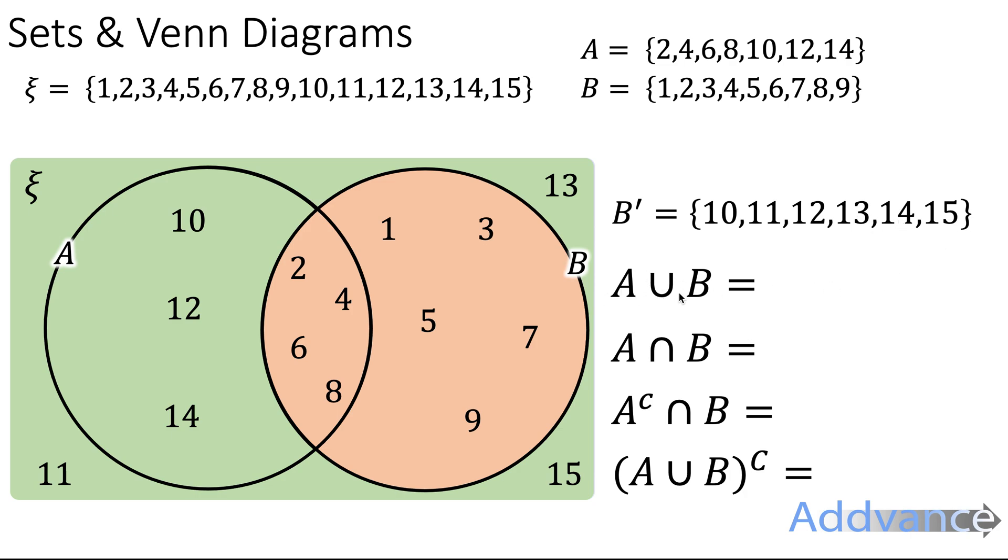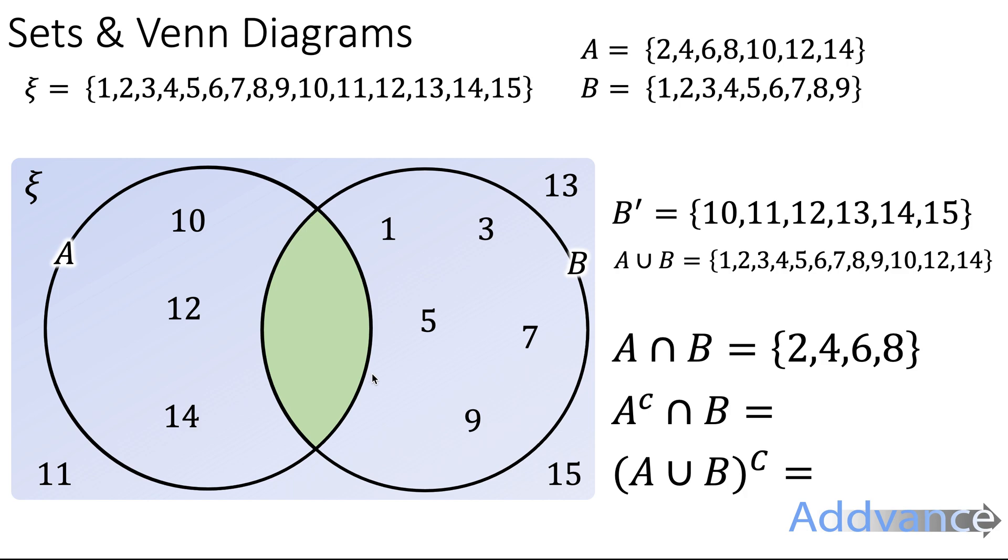Now A union B. That's everything in A, everything in B, and everything in the overlap, like this. That's A union B, which includes all of those elements. Now A intersection B. That's everything in the overlap of A and B, which is this green part here, which is 2, 4, 6, and 8.